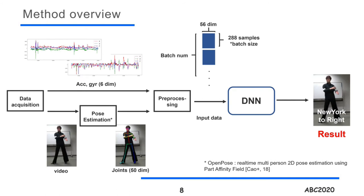Here is an overview of our method. We first acquire data from accelerometer, gyroscope, and video. Then the 25 two-dimensional joint positions are acquired by pose estimation. After that, we perform some preprocessing and then put the data into a deep neural network to obtain the predicted result.